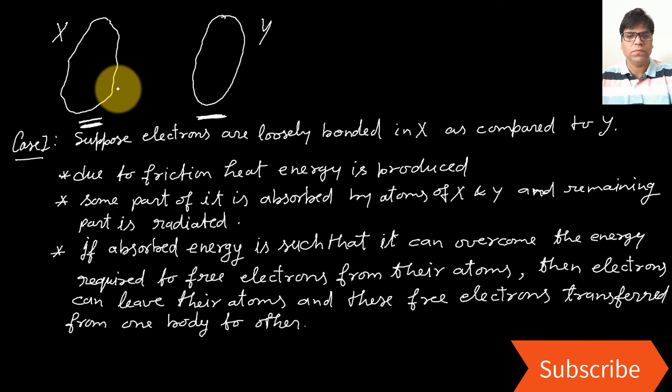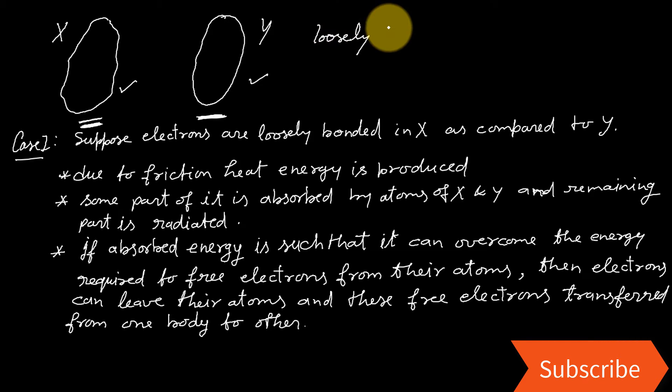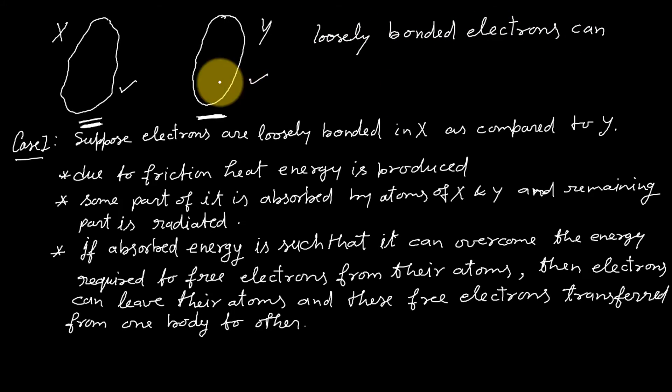If absorbed energy is such that it can overcome the energy required to free electrons from their atoms, then electrons can leave their atoms and these free electrons transferred from one body to other. Here as in object X, electrons are little loosely bounded as compared to Y. Therefore when we rub X with Y, energy is absorbed by both X and Y and loosely bonded electrons can easily get free in X than Y and transferred from X to Y.